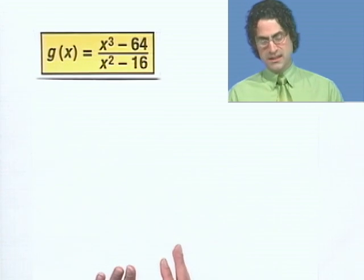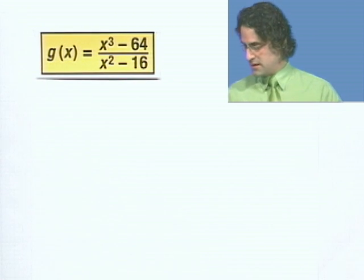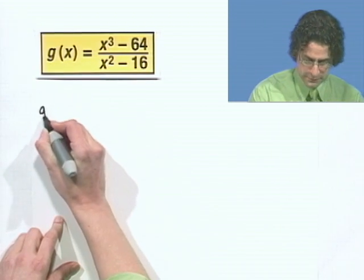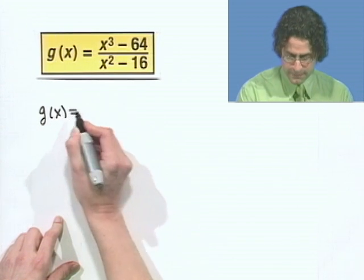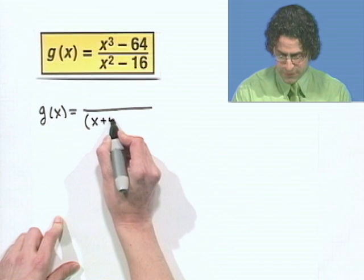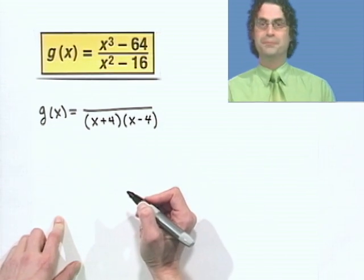Well I immediately see that I can factor the denominator because that's the difference of two perfect squares. And so I know how to do that. In fact, that's going to be x plus 4 times x minus 4. So that's sort of great.